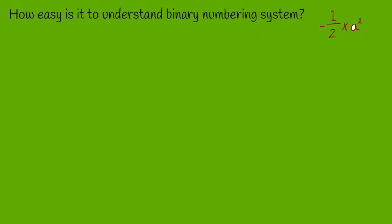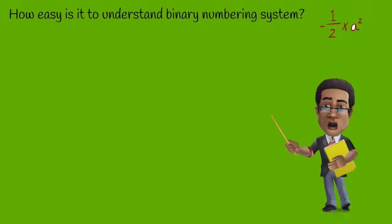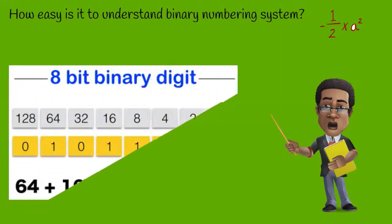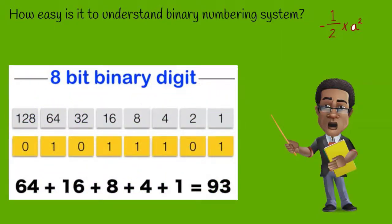How easy is it to understand a binary numbering system? Two plus two is easier, but that's first grade math. The binary system is based on the number two. An octet has eight digits — each digit is a bit of information. Eight bits are a byte, so an octet equals one byte. An IP address is four bytes long and has 32 bits. The bits in the octet are counted from right to left, with the first bit equaling one and the last bit equaling 128.